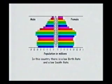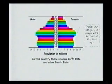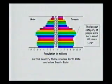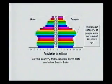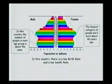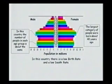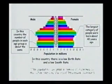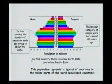This country has a low birth rate and a low death rate, typical of many European countries. You can see that the largest category of people were born about 40 years ago, and the base is moving up with fewer and fewer children being born. The birth rate has remained almost constant over the last 30 years, and this pyramid is typical of countries in the richer, developed part of the world.